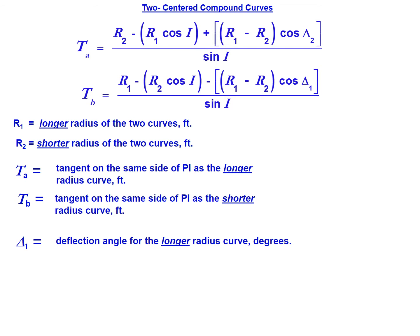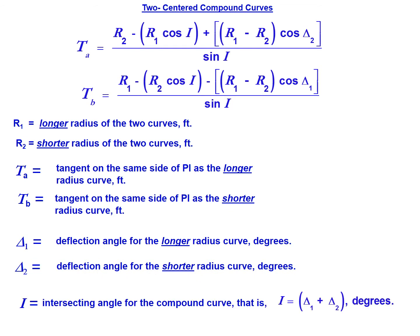Delta 1 is the deflection angle for the larger radius curve, and delta 2 is the deflection angle for the smaller radius curve, where I is the intersecting angle for the compound curve, where I equals each of the incremental deflection angles delta 1 plus delta 2.